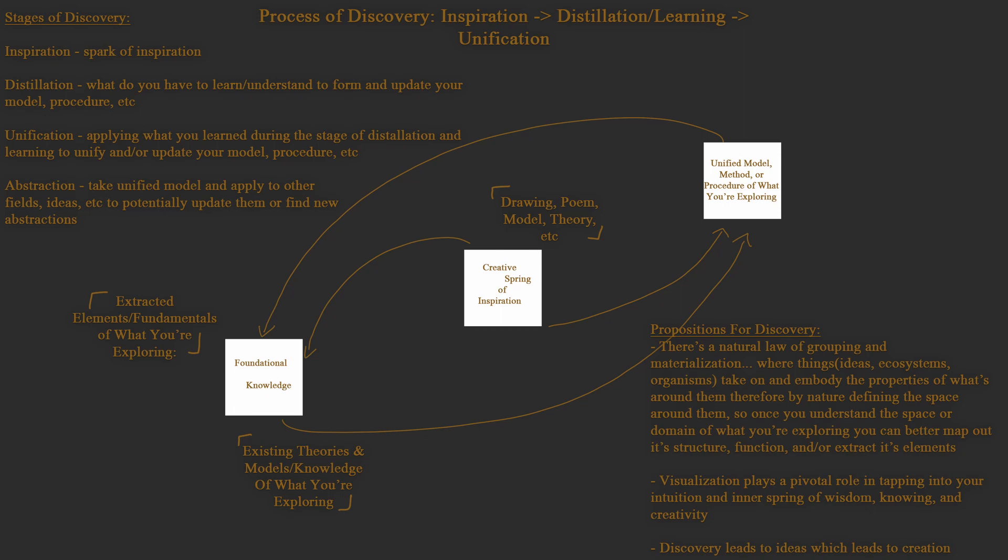I was able to articulate a few propositions for discovery. So I think a foundational thing that I've observed is that there's a natural law of grouping and materialization where things like ideas, ecosystems, organisms take on and embody the properties of what's around them, therefore by nature defining the space around them. So once you understand the space or domain of what you're exploring, you can better map out its structure.